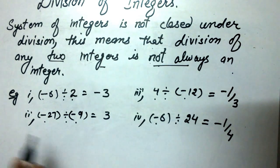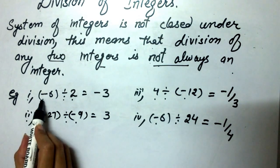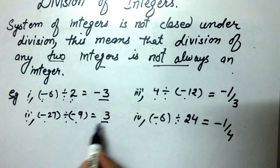So here we can see that in example 1 and 2, division of two integers is also an integer.